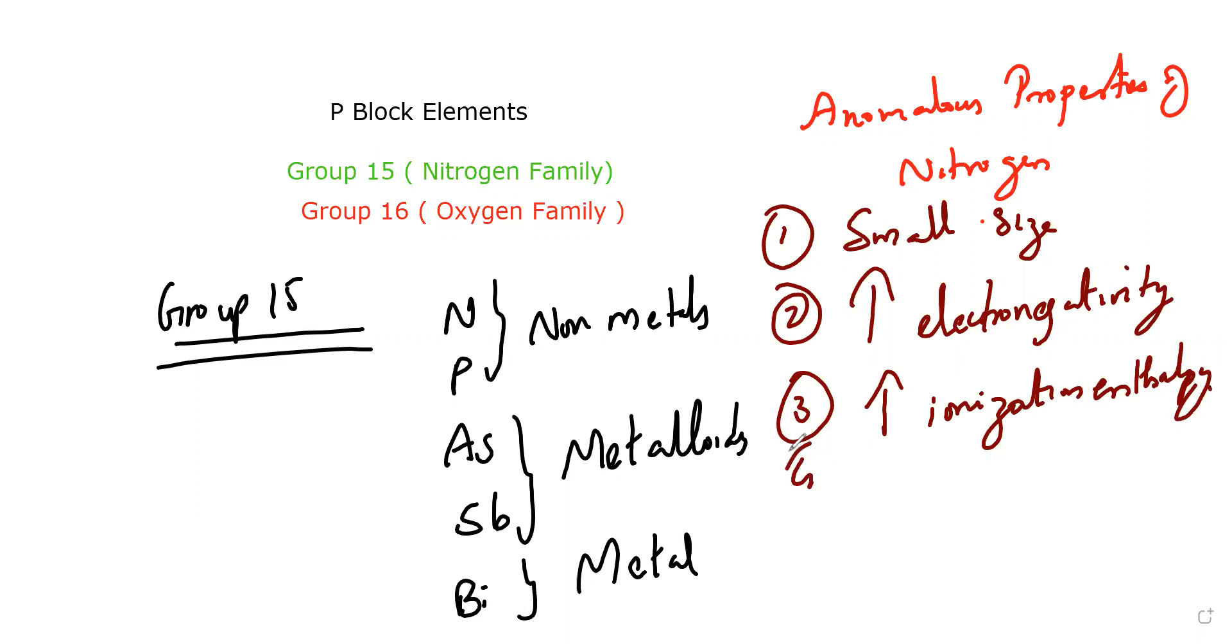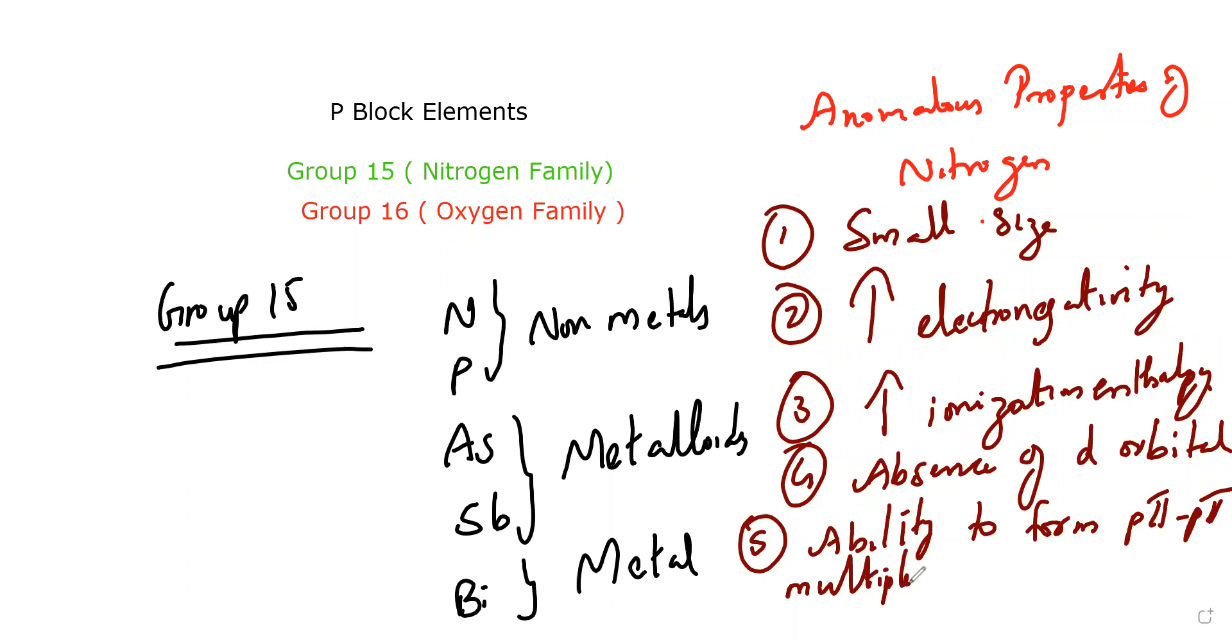One of the most important things is absence of d orbitals. Since nitrogen is very small, it does not have d orbitals. The last important point is the ability to form pi-pi bonds. Nitrogen can form multiple p-pi to p-pi bonds with itself or with other elements having small size and high electronegativity.